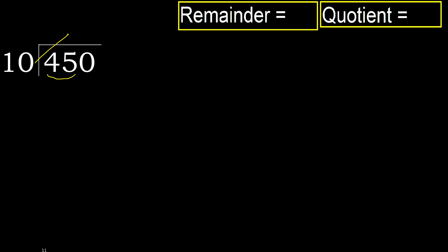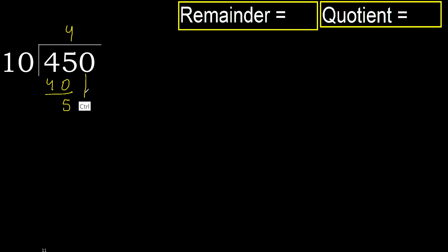Multiply by 5: 50 — 50 is greater. Multiply by 4: 40 is not greater. Subtract: 45 minus 40 is 5.